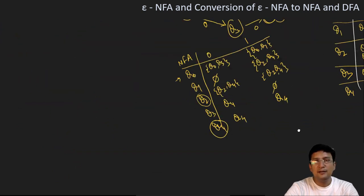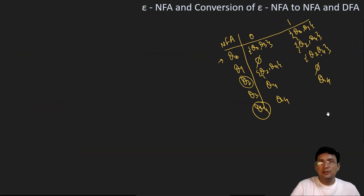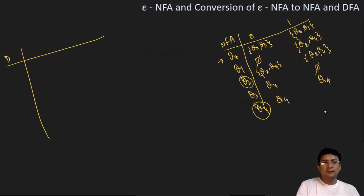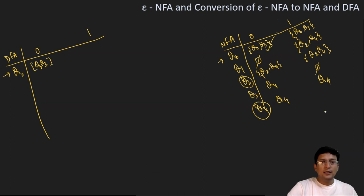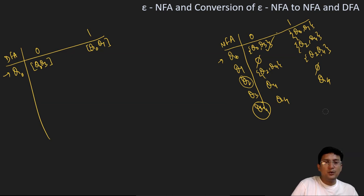Now it is time for defining the transition table for the DFA. We take q0 as the start state and show transitions on 0 and 1. q0 on 0 leads to {q0, q3} — so I'll make a new state named q0q3. q0 on 1 leads to {q0, q1} — so I'm making a new state named q0q1. So these are two new states: q0q3 and q0q1.